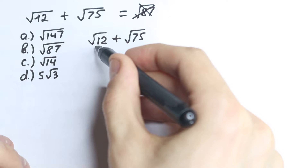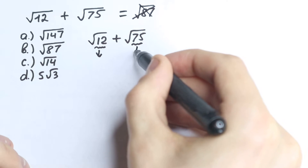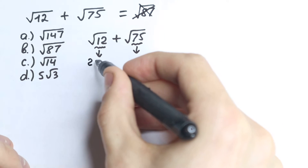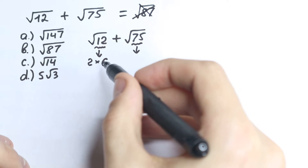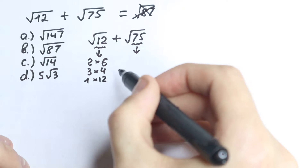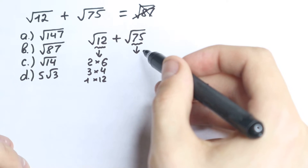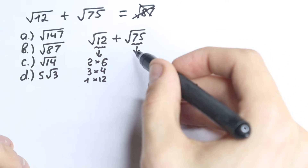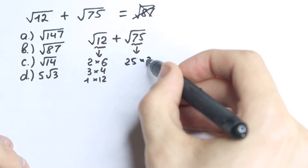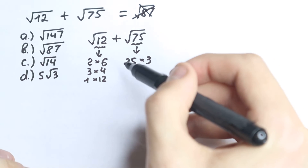How can we work with this? We need to look at these two numbers: 12 and 75, and express them in another way. For 12, we can express it as 2 times 6, or 3 times 4, or 1 times 12 — three types of expression. For 75, we can express it as 25 times 3. We could also use 5, but that's not useful here.